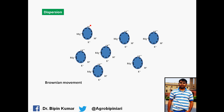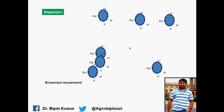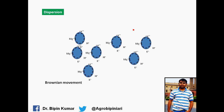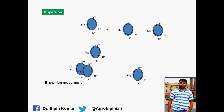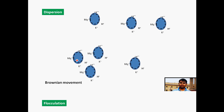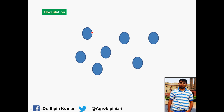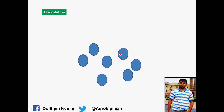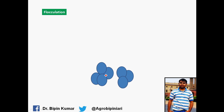Another property is dispersion. In water, colloids disperse because they are charged, and because of this charge they repel each other, forming a suspension. This repelling and colliding behavior is called Brownian movement. When the charge around a colloidal particle decreases, they will automatically settle down and form a precipitate or floc. This property is called the flocculation property of soil colloids.